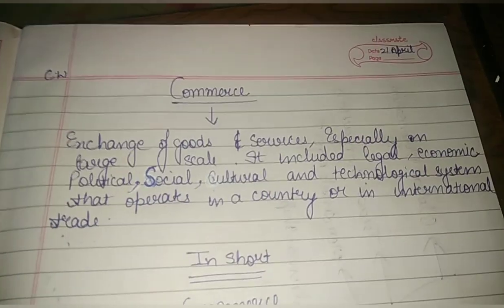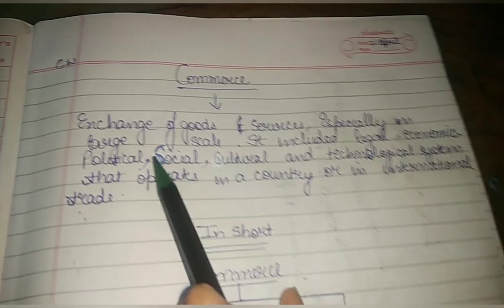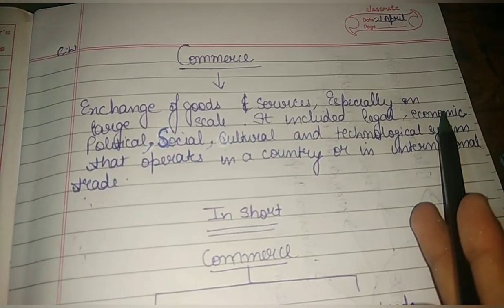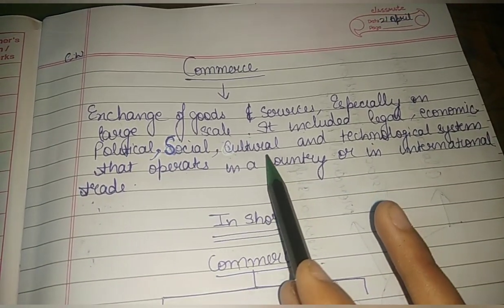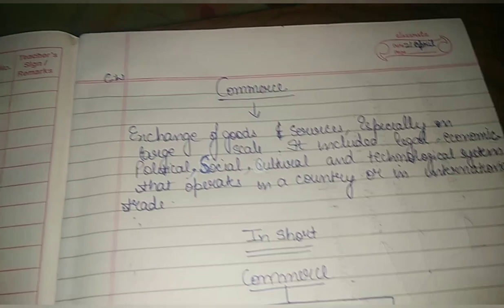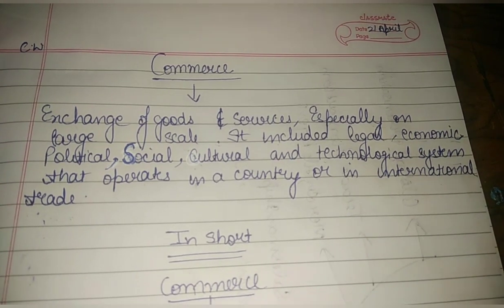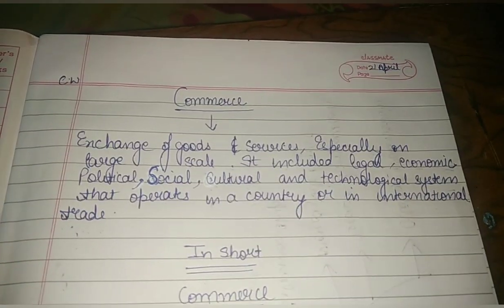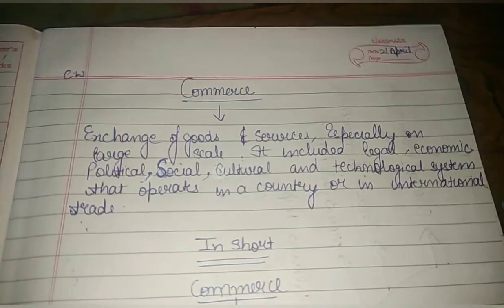Then we will come to our main subject, that is accounts. So what does commerce mean? Commerce is the exchange of goods and services, especially on a large scale. It includes legal, economic, political, social, cultural, and technological systems that operate in a country or in international trade. Basically it is the exchange of goods occurring on a large scale, which can occur legally, economically, politically, socially, culturally, and technologically within a country or outside of it.